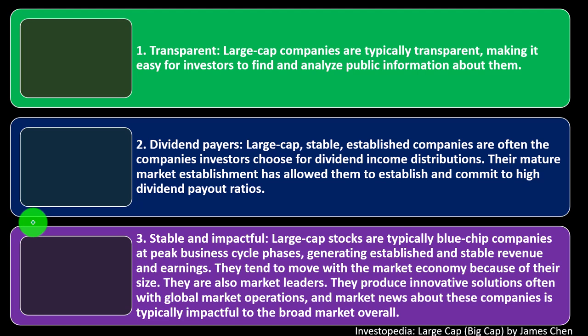Number three — stable and impactful. Large cap stocks are typically blue chip companies at peak business cycle phases, generating established and stable revenue and earnings. They have their infrastructure in place and tend to move consistently with the broader market economy. They are also market leaders producing innovative solutions, often with global operations. News about these companies is typically impactful to the broad market overall, because they're so large that their moves reverberate through the rest of the market.